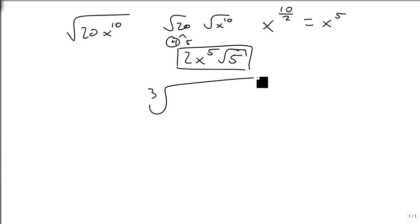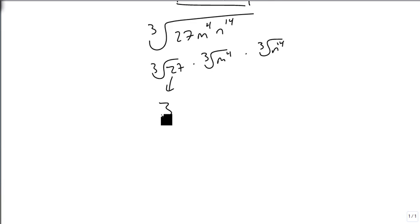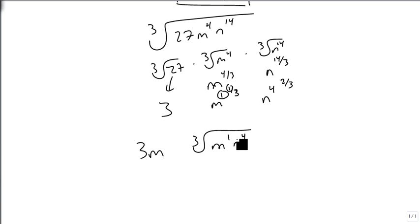Likewise, we can look at the cube root of 27m to the 4th n to the 14th. We're able to break this up into the cube root of 27 times the cube root of m to the 4th, times the cube root of n to the 14th. And we get to do something really cool here. The cube root of 27 is 3. This becomes m to the 4 thirds, which is m to the 1 and 1 third, which says a single m comes out, but we leave a single m inside. And this becomes n to the 14 thirds, which is n to the 4 and 2 thirds. So 4 n's come out, and 2 n's stay inside. So my answer is 3m n to the 4th cube roots of m n squared.